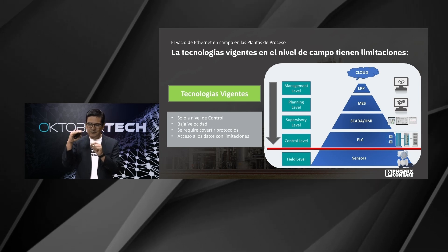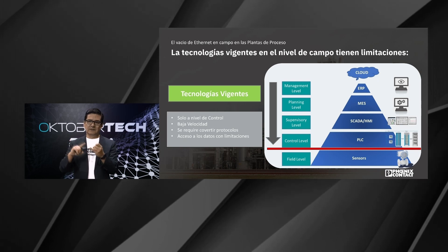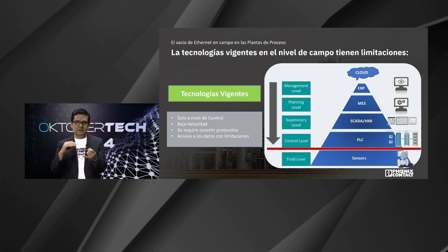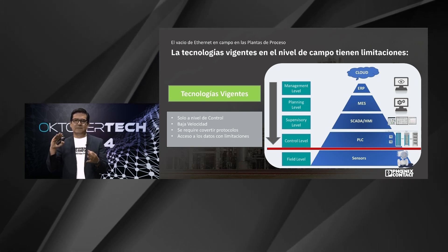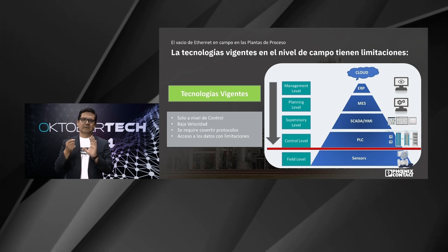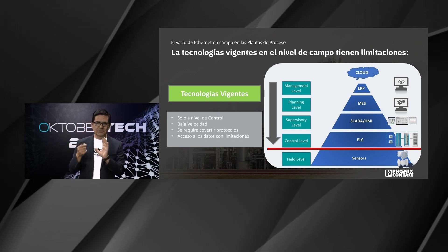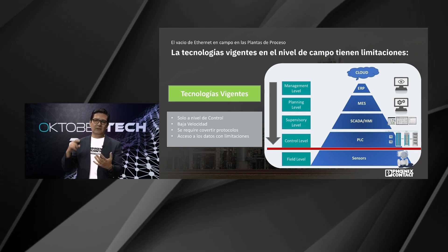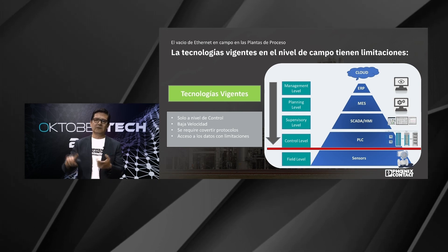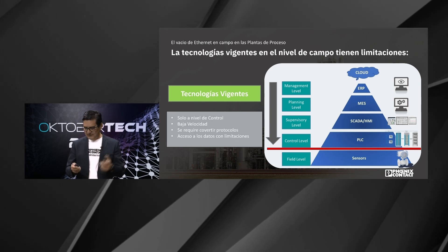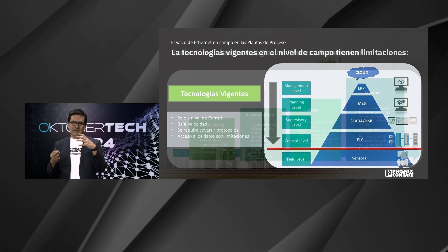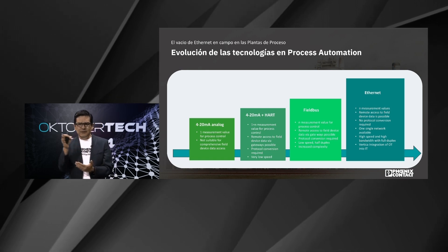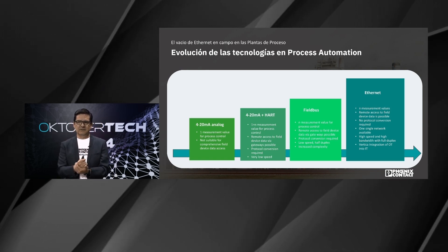Estamos cerca, pero todavía no logramos. Lo tenemos solo a nivel de control. En lo que se refiere a instrumentación hoy día, la parte de válvulas, baja velocidad, tenemos que convertir protocolos. Si bien es cierto, la información y los datos los obtenemos con facilidad, en lo que se refiere a mantenimiento, diagnóstico, reconfiguración y analítica, todavía estamos al debe. Vamos a hablar de la evolución en las tecnologías en lo que se refiere a industria de proceso.